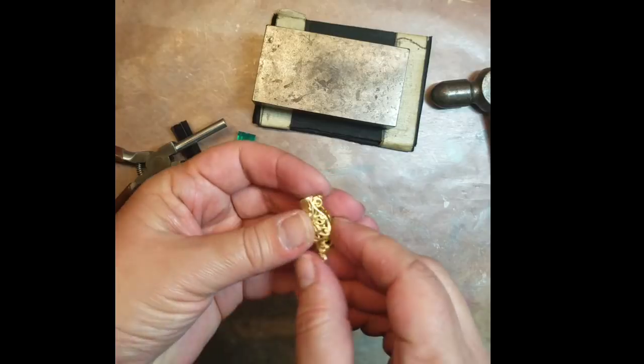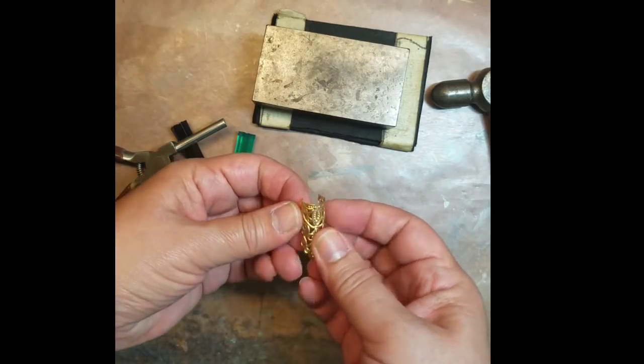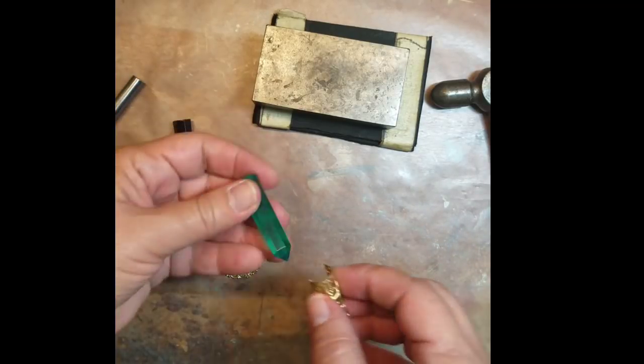Once you remove it from your plier you have a nice round shape. Just gently open it enough to fit the crystal through the filigree.